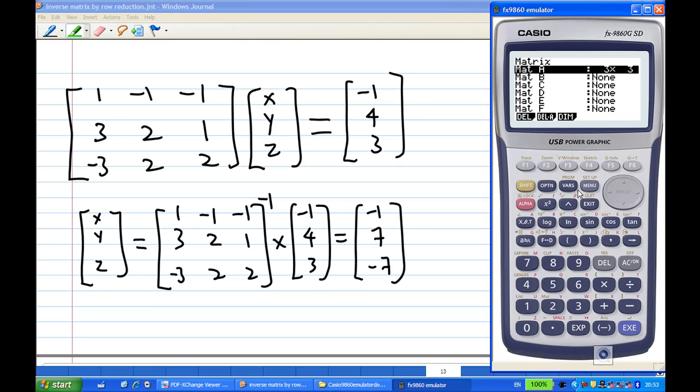Now I want to enter matrix B. So move down and press exe. Matrix B has three rows and one column. Press exe again. So matrix B, I'm going to fill in minus 1, 4, 3. Then exit.